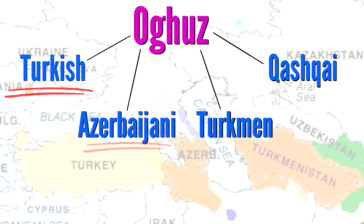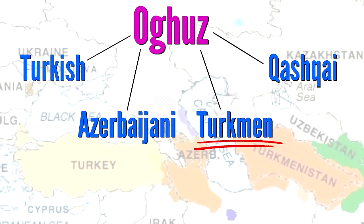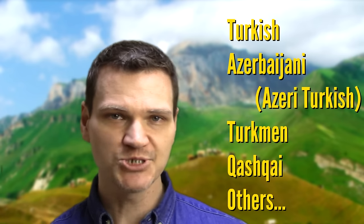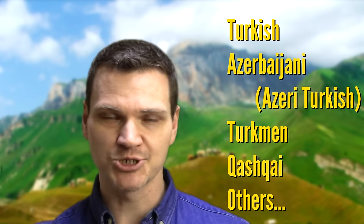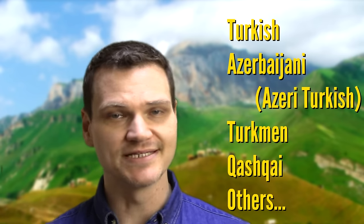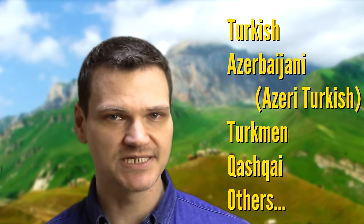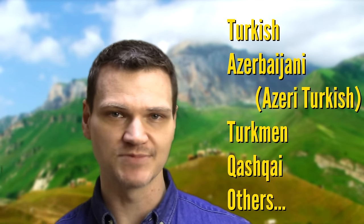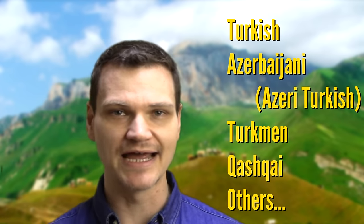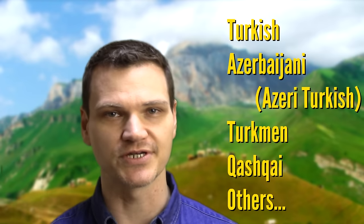Turkish is part of the Oghuz branch of the Turkic language family. It also includes Azerbaijani, sometimes called Azeri Turkish, as well as Turkmen, and some other languages like Qashqai, which is spoken in parts of Iran. The languages of the Oghuz branch are all mutually intelligible to some extent, and these are the languages sometimes considered to be dialects of Turkish.